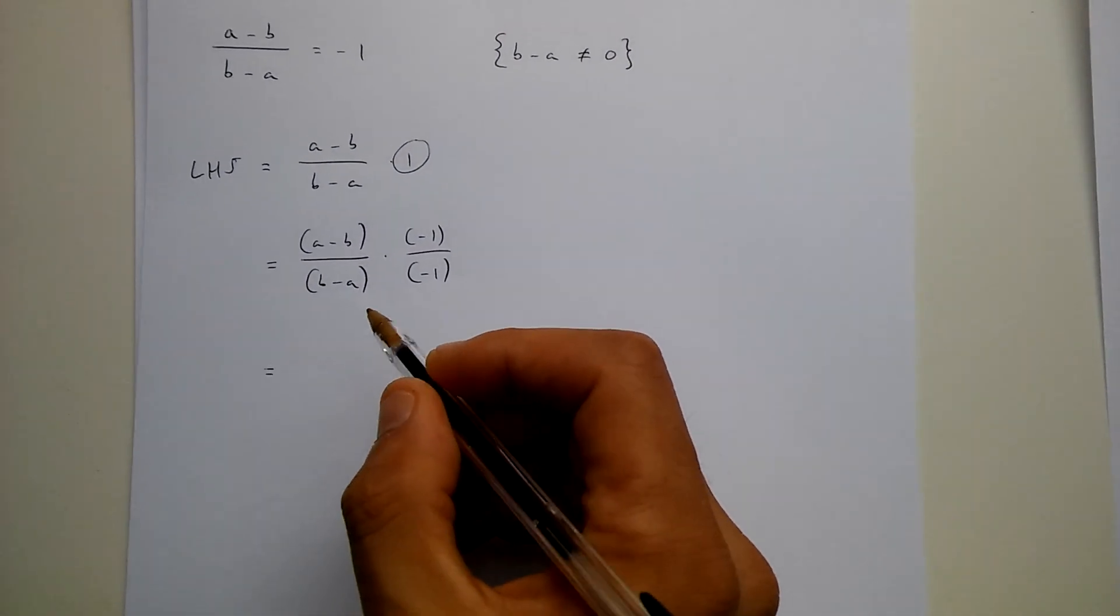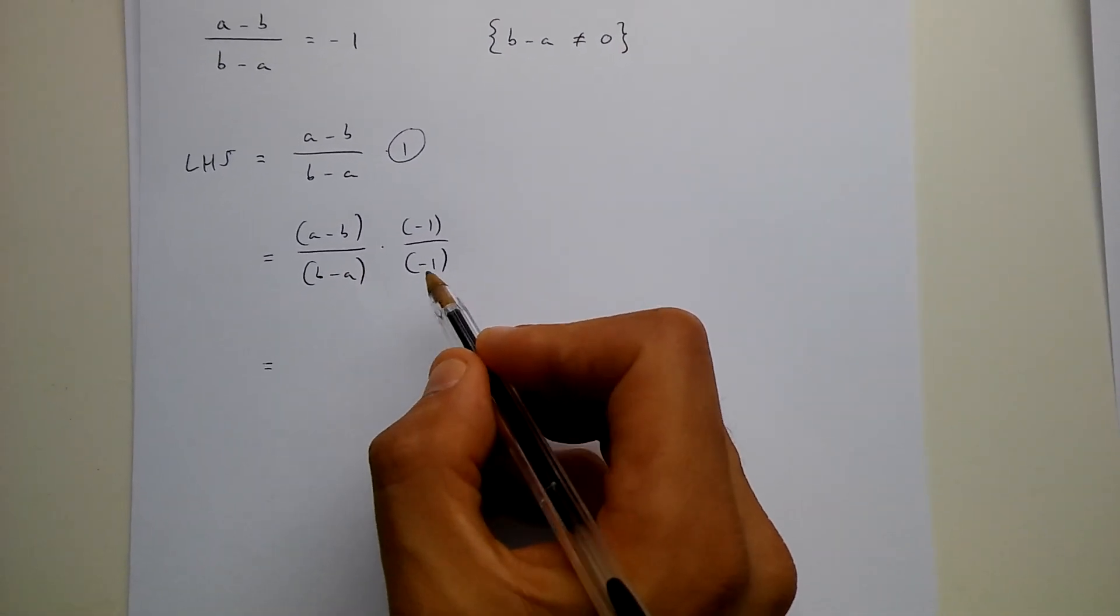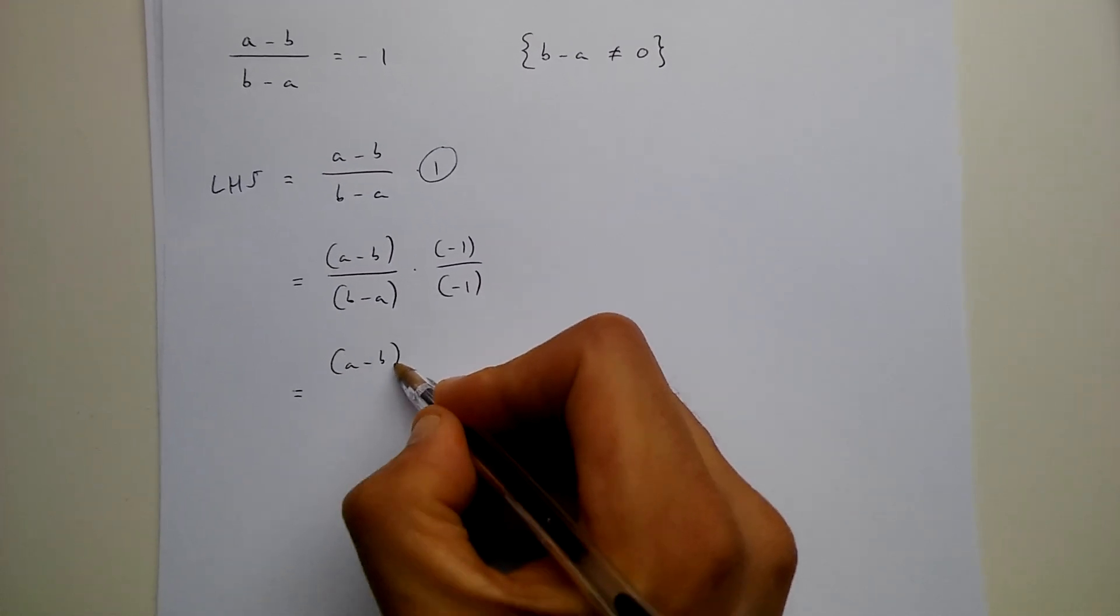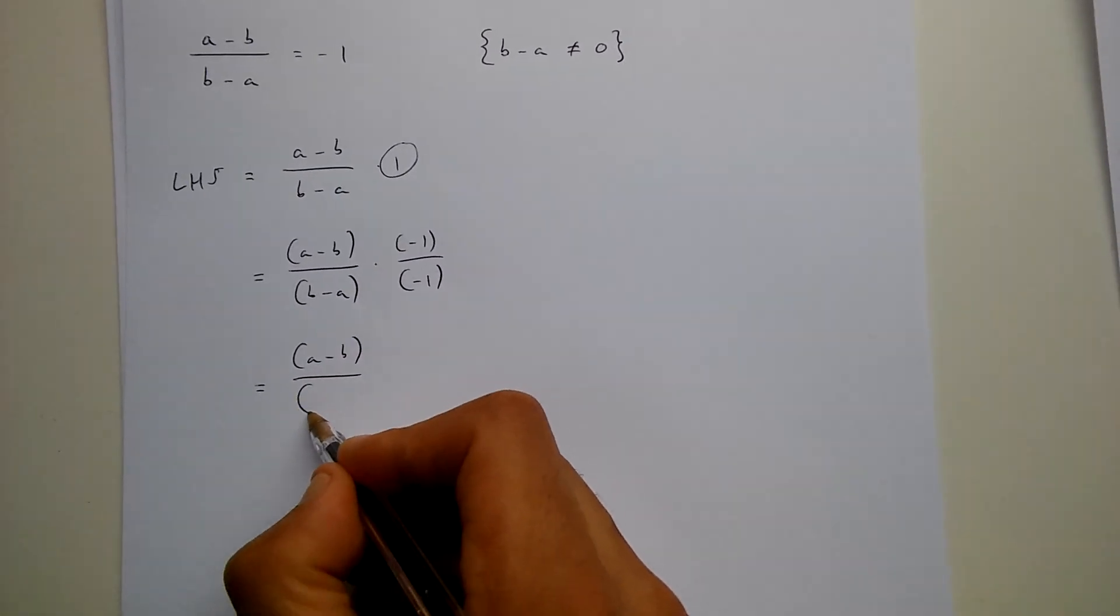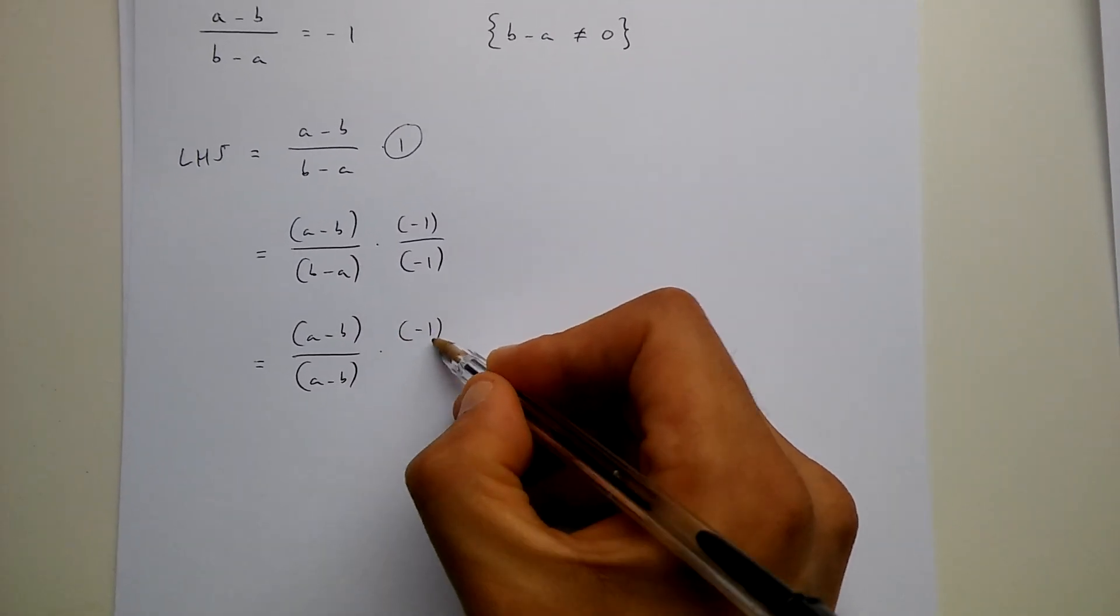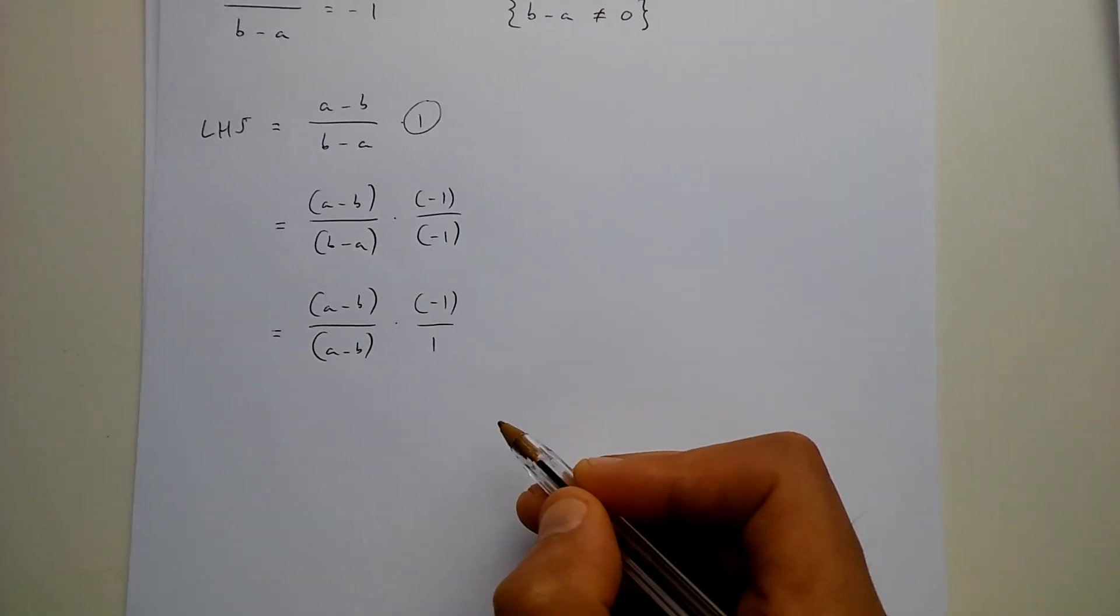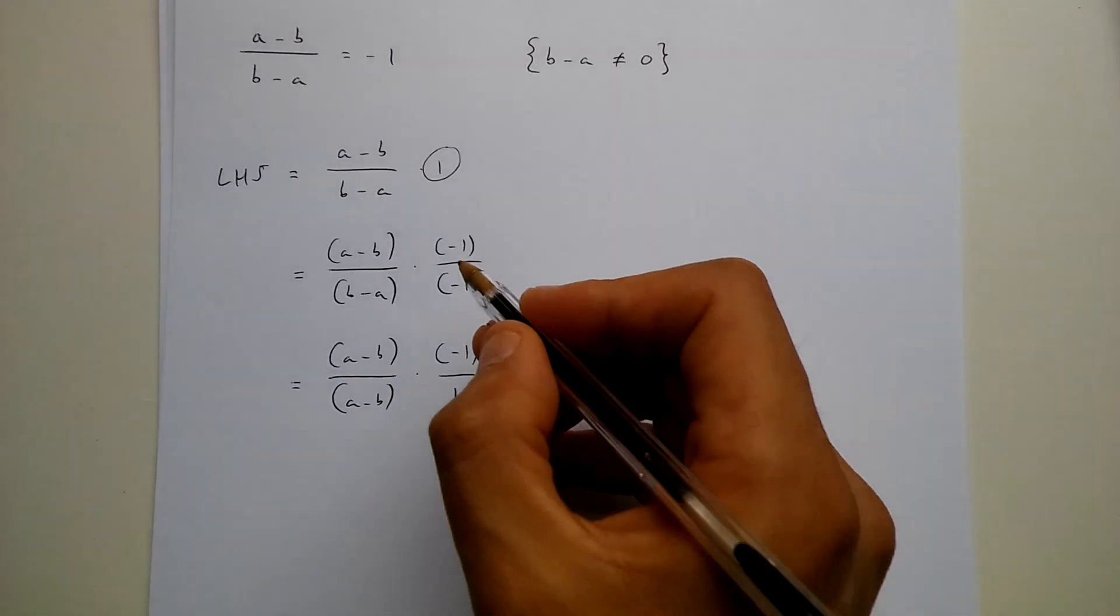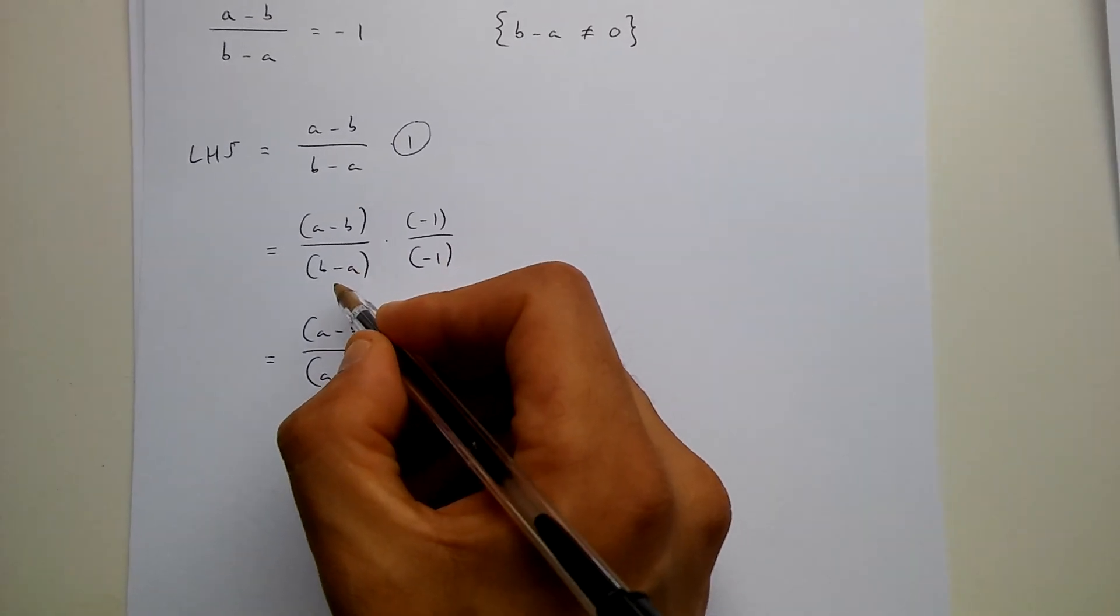Now if we multiply this by this what we end up getting is a minus b over a minus b times minus 1 over 1, because we multiply this by this.